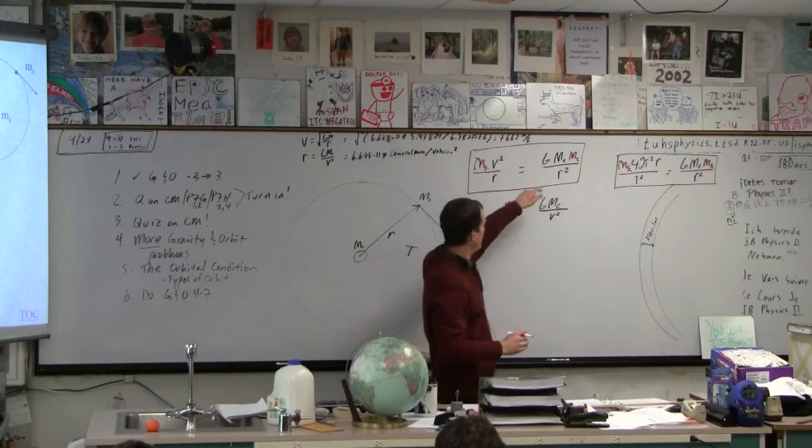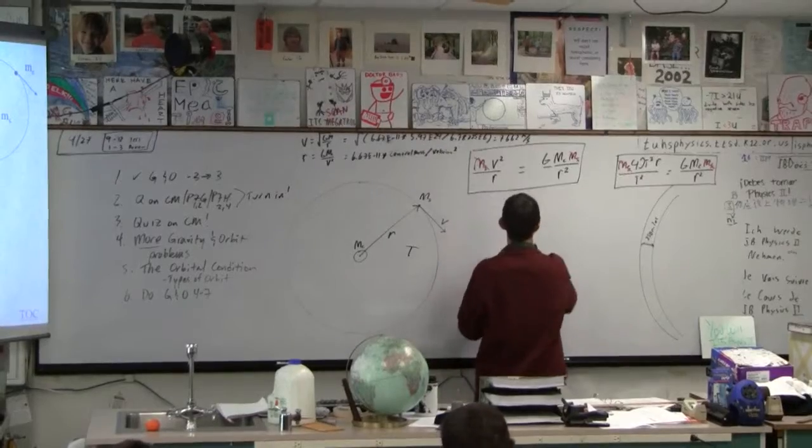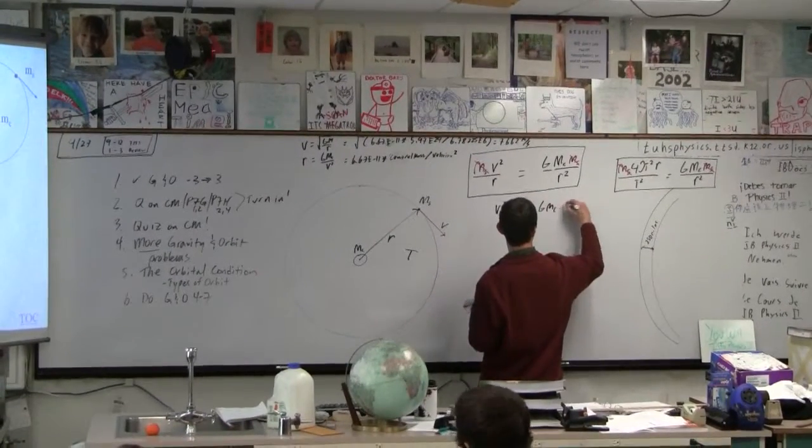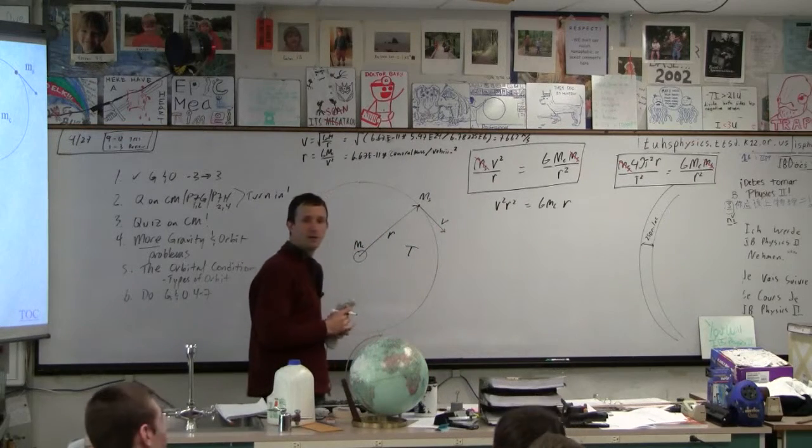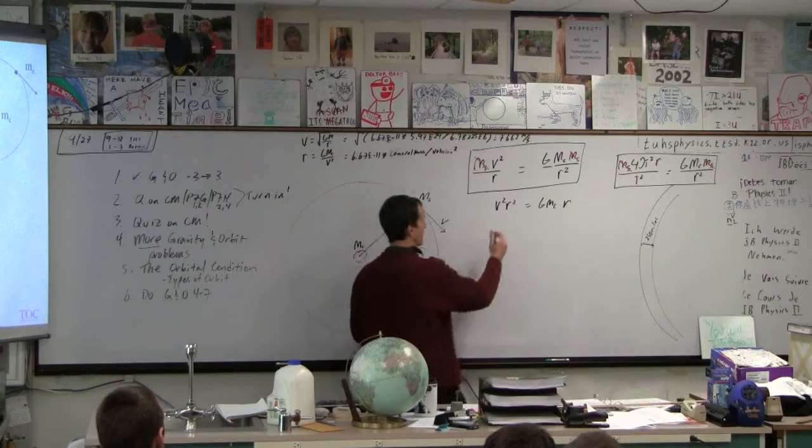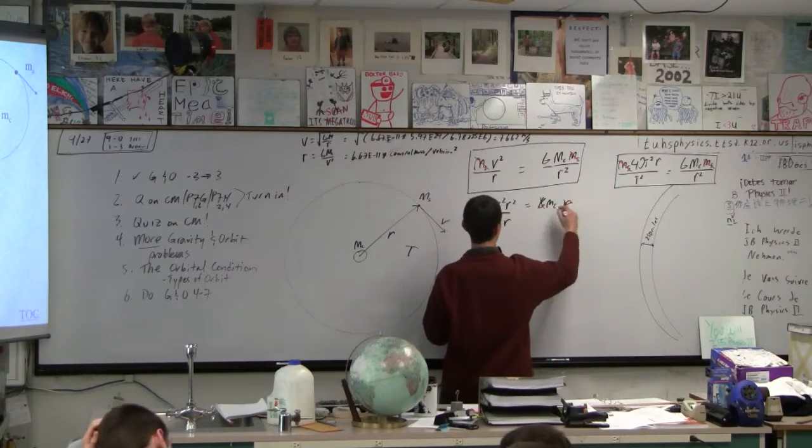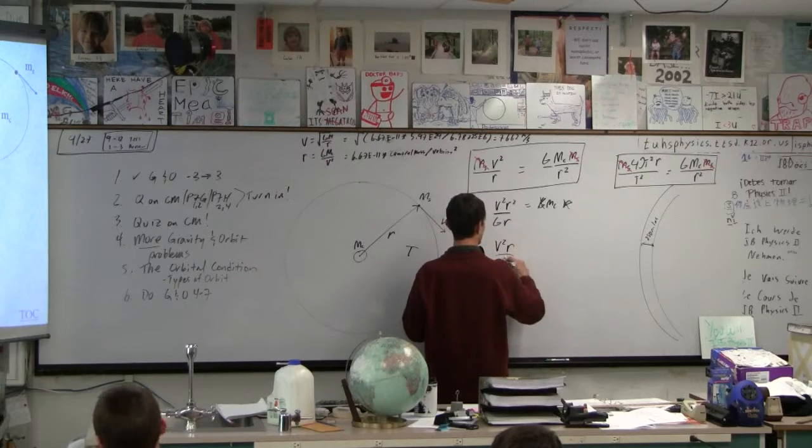And what else might we solve for? The mass? Yeah, I bet you would. Okay, what's our first step? Same thing. V squared R squared is GMcR. What do we do now to get Mc by itself? Divide by GMcR, right? Alright, that makes them go away. So don't we end up with V squared R over G? Is that right? Let me know, because people are writing these down in their cheat sheets.